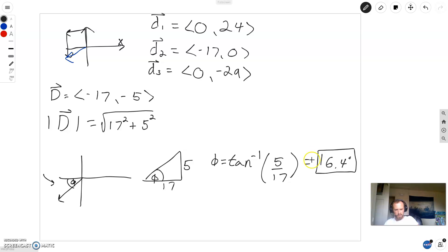So what direction do you have to look? You could either say 16.4 degrees south of west. Or, you could say 180 plus 16.4 degrees equals 196.4 degrees from the x-axis.